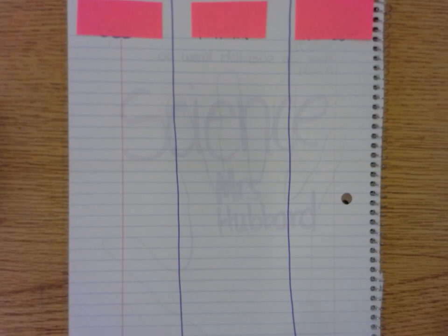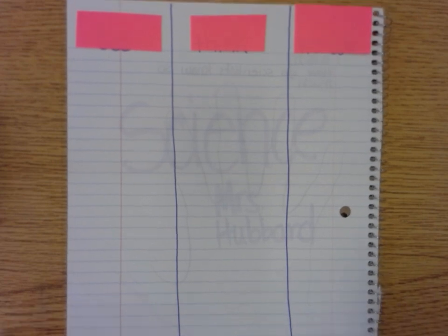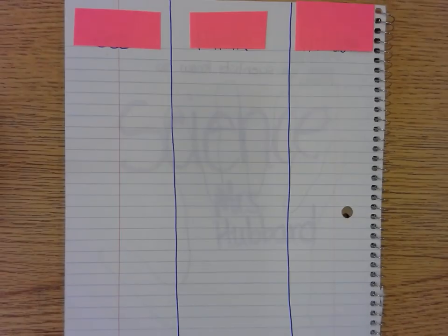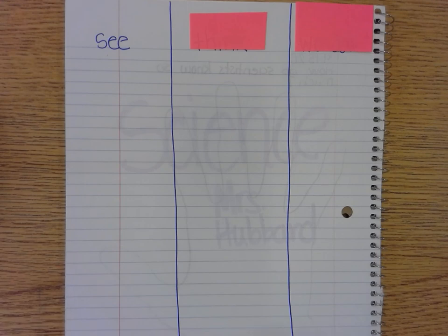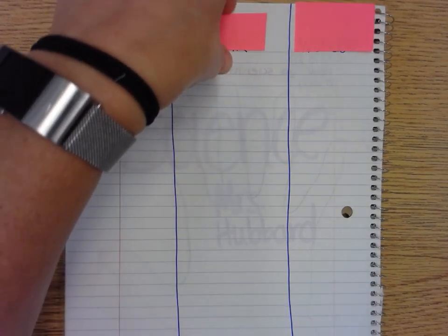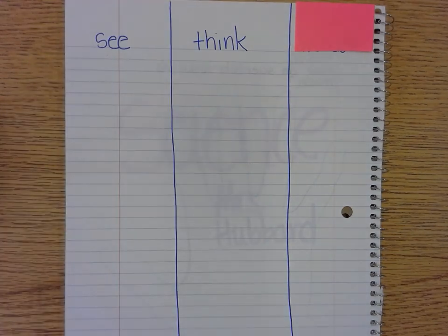After you've made the three columns we're going to label the columns. The first column I'd like for you to label with the word 'See.' As scientists we are observers and we are going to be writing about what we observe. Then the middle column is 'Think.' Once we've made our observations we're going to start thinking and we're curious — we're going to ask how and why.